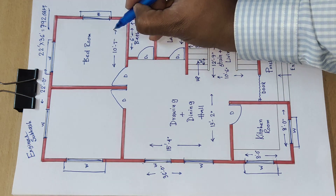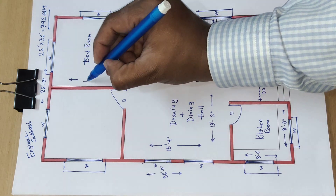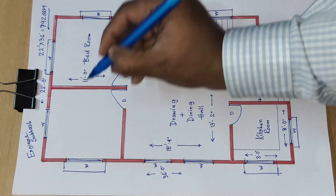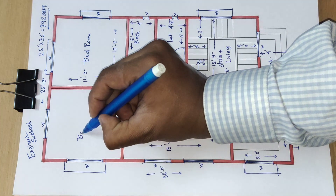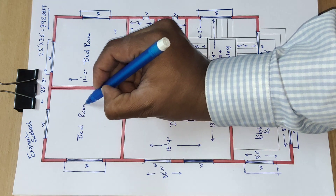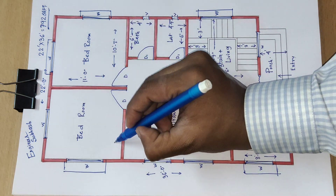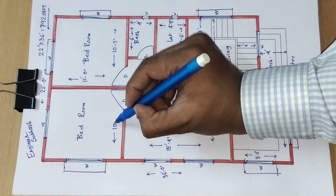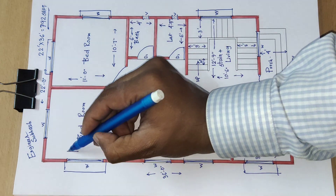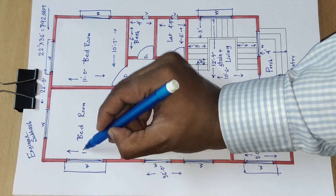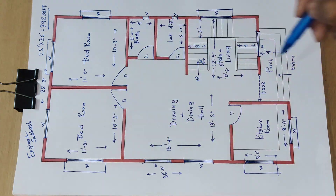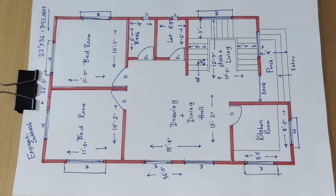One bedroom measures 10 feet 7 inch by 11 feet 0 inch. The next bedroom measures 10 feet 2 inch by 11 feet 0 inch. There is also a garden area of 11 feet 1 inch.